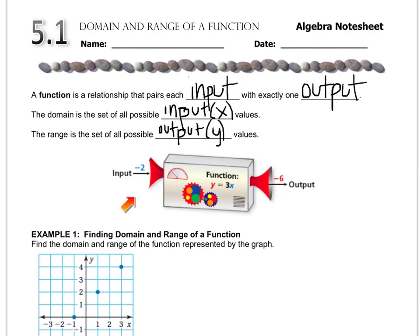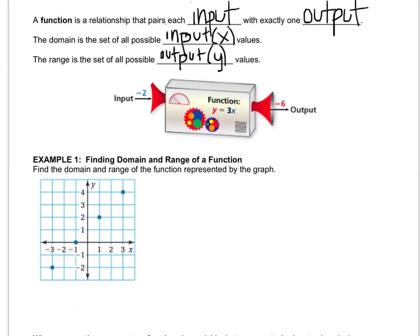So there's this little function machine thing, and the function is y equals 3x, and you input negative 2, and it does its little machine thing, and the output is negative 6 based on the function. The input is also called the domain, and the output is also called the range.